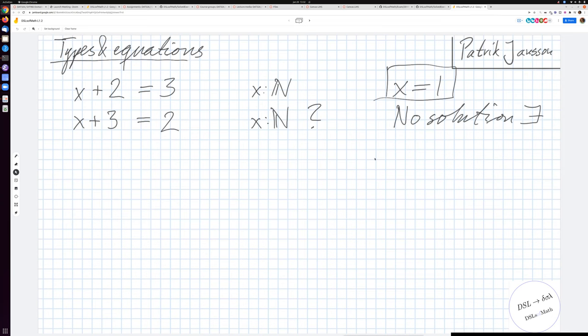So if we say instead, let x be an integer, including both positive and negative numbers, then we suddenly have a solution. Then we have x equals minus 1 as a solution to x plus 3 equals 2. So as you can see here, the existence of solutions really depends on the type of the free variable in the equation.